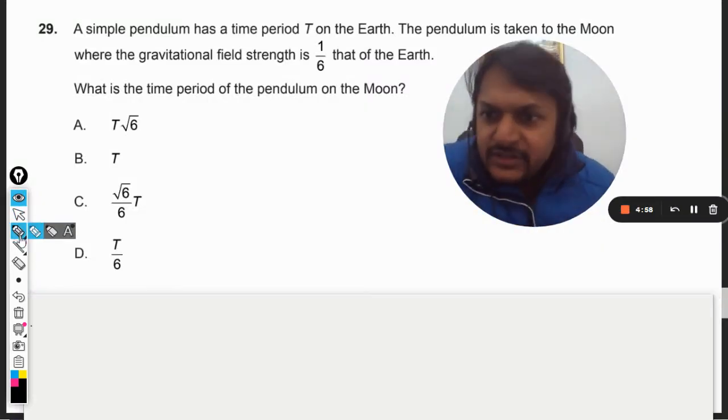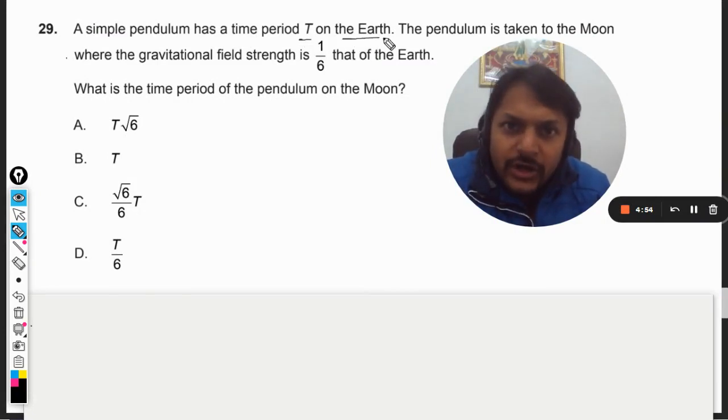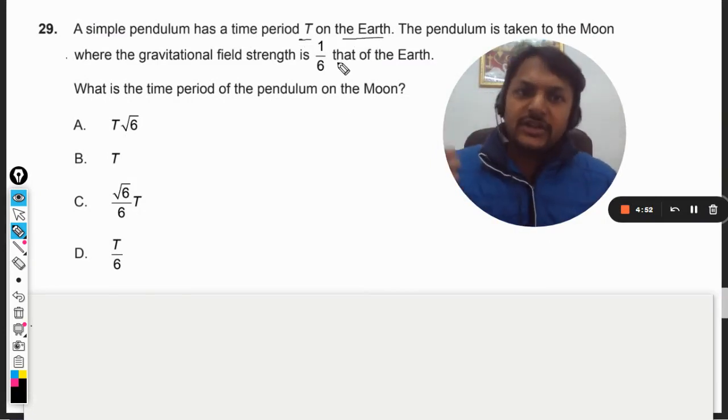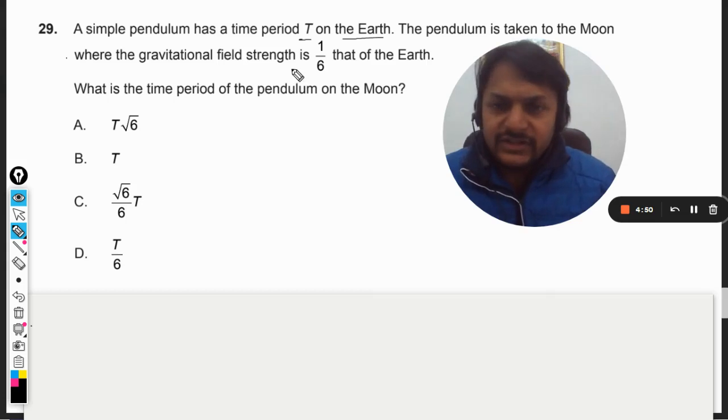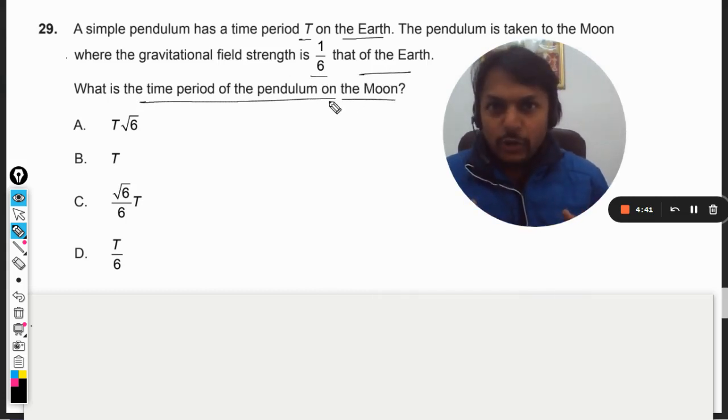Okay dear students, let us see what is there in this question. A simple pendulum has a time period T on Earth. The pendulum is now taken to Moon where the gravitational field strength is 1 by 6 that of the Earth. What is the time period of the pendulum on the Moon?